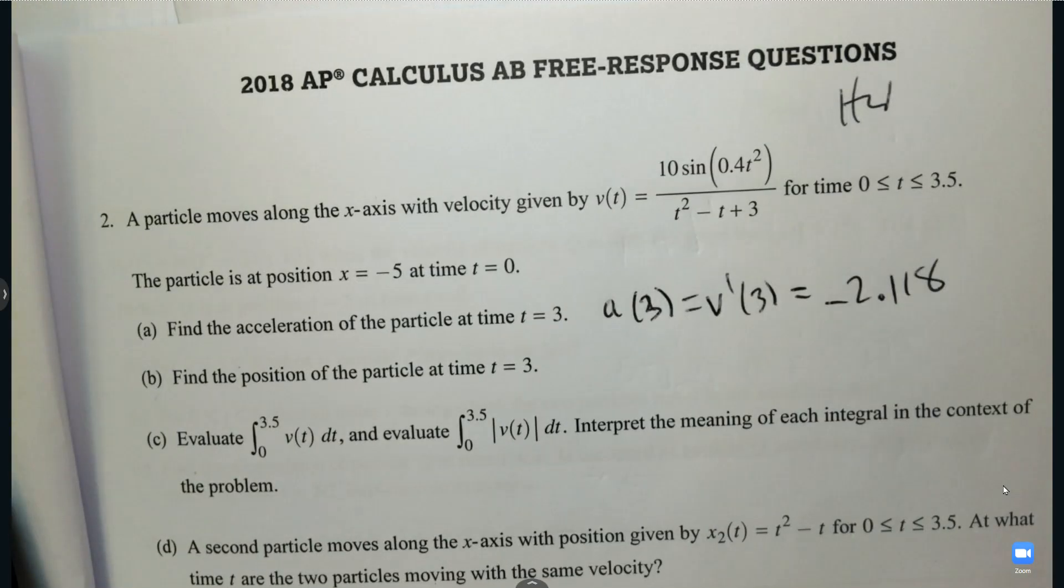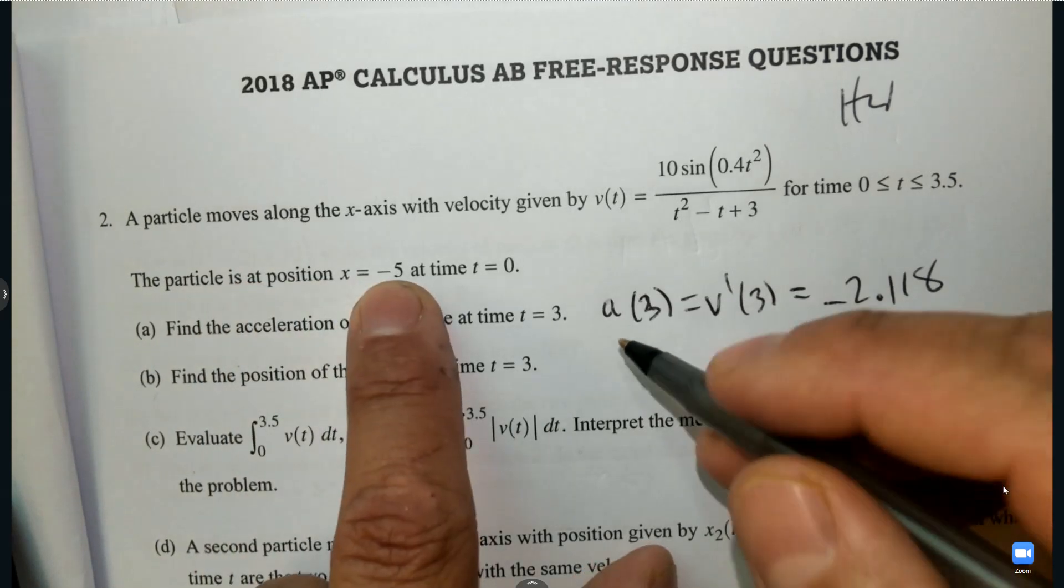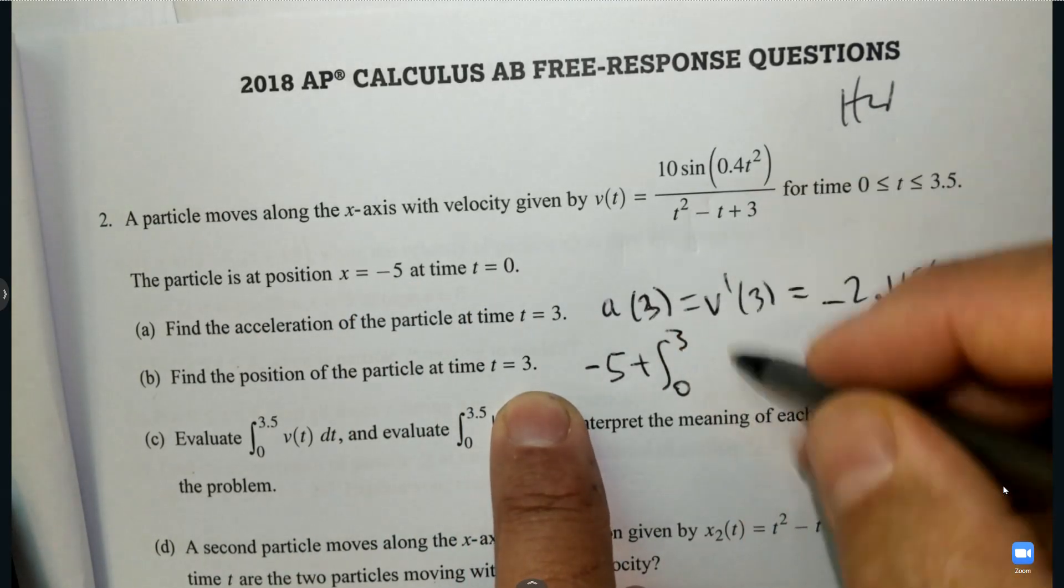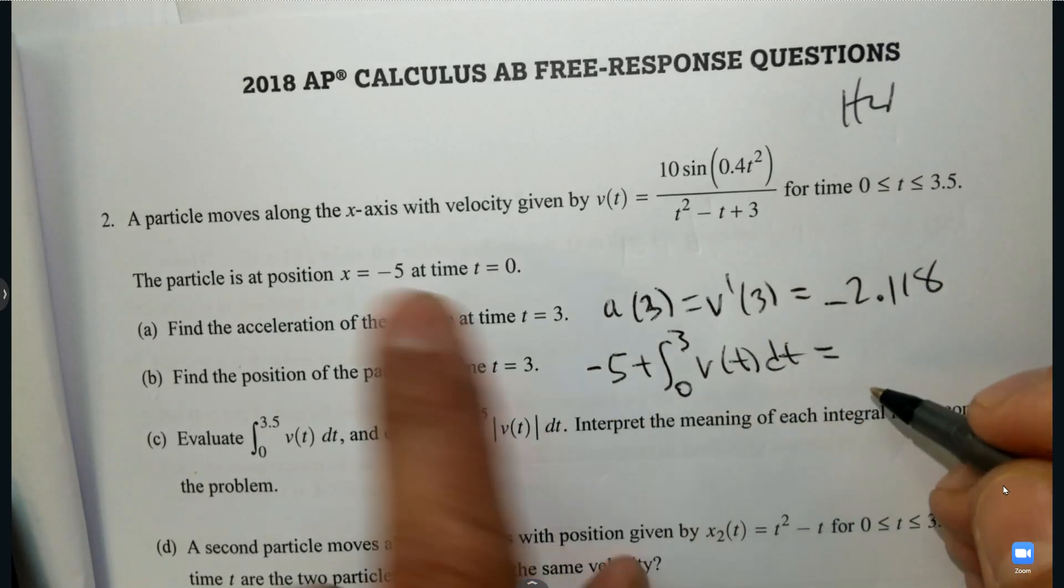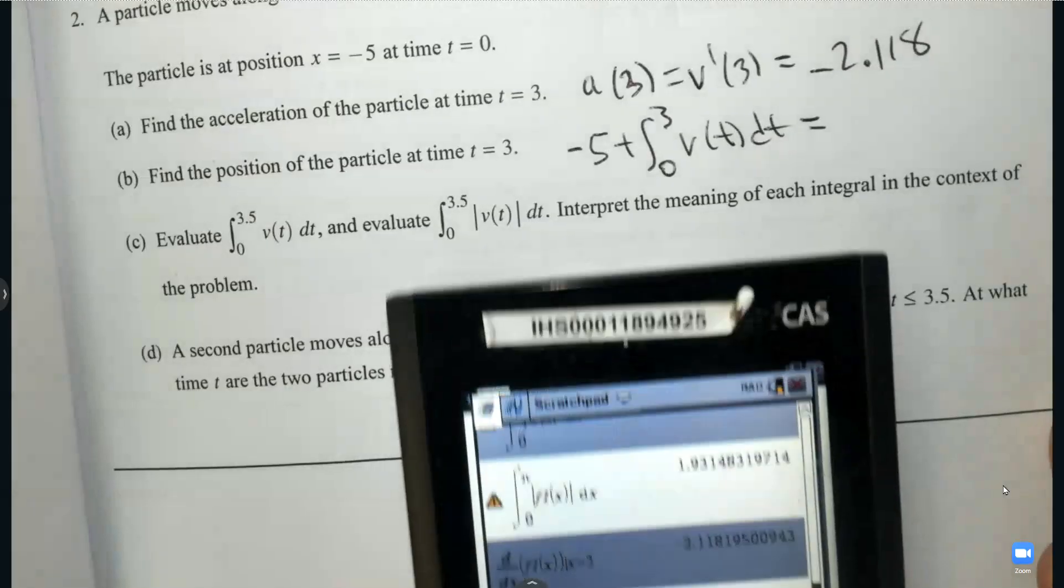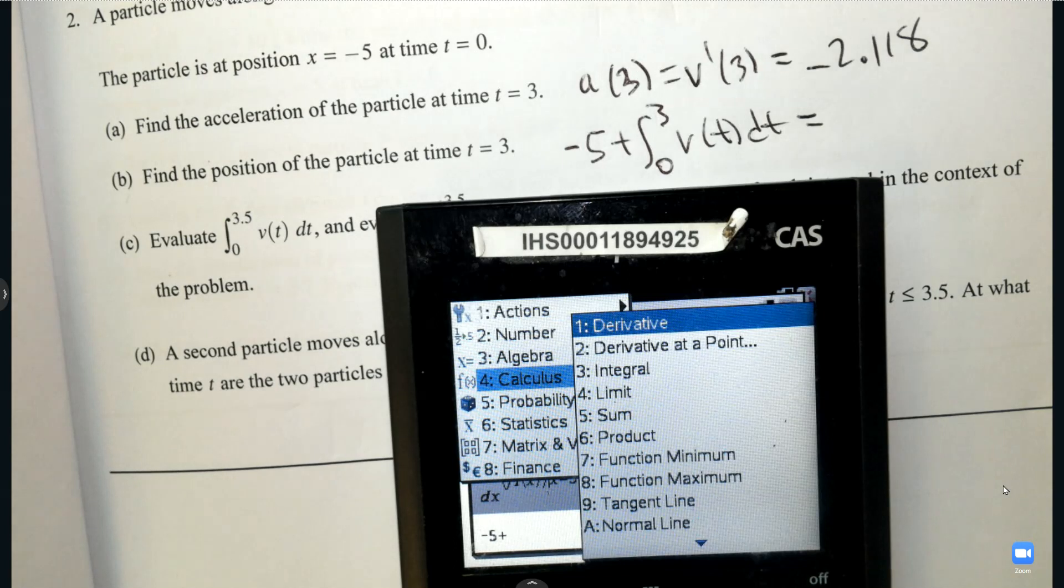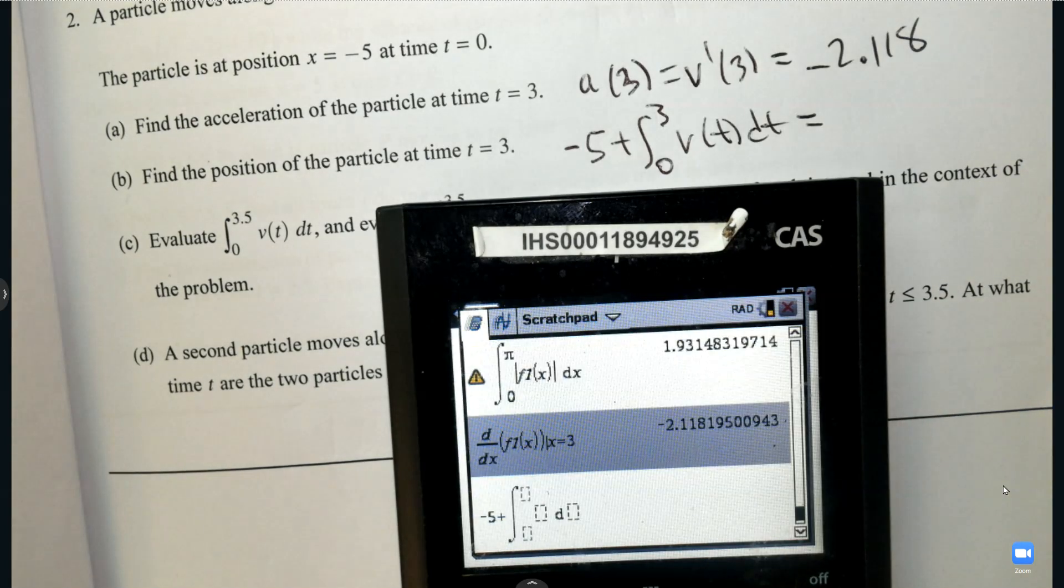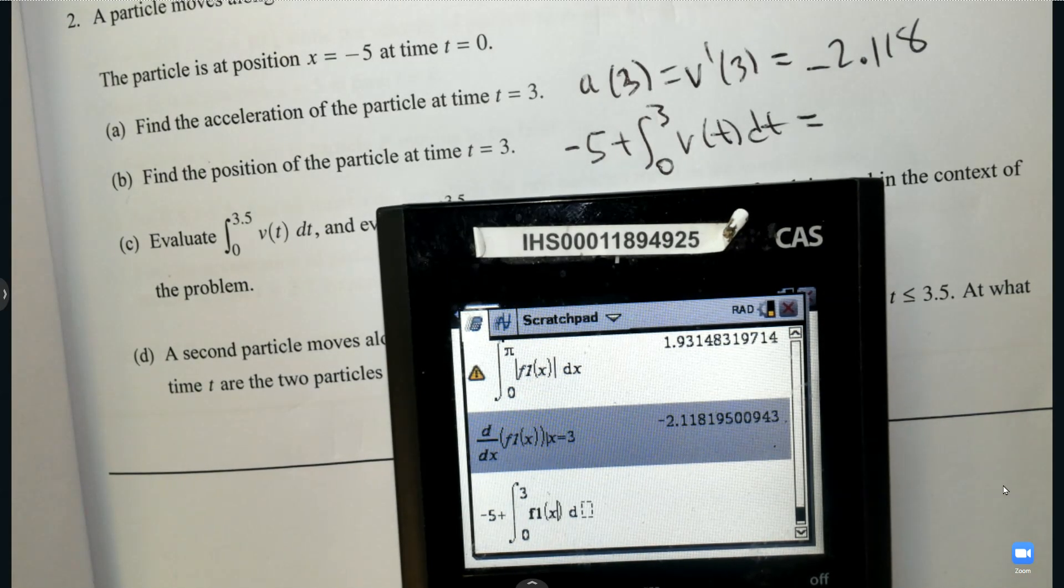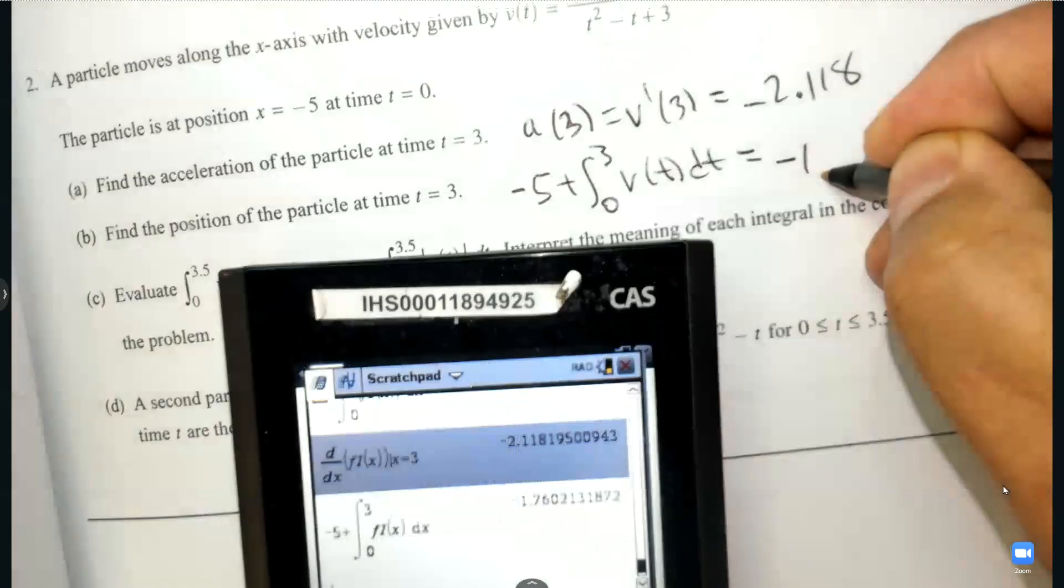Part B, find the position of the particle at T equals three. So to find the position at three, the particle has a position at negative five and starting at zero up to three. So we're going to integrate the velocity. We don't need to retype all of that in. Here we're showing we start at negative five. We're going to integrate from zero to three, the velocity, and now type it in. Again, that's F1 at X. So it's negative 1.760.